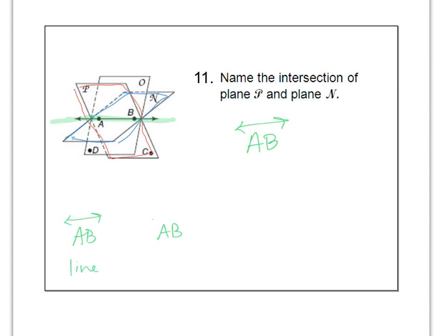this right here is line a, b. This right here is segment a, b. And this right here, with nothing above it, is distance from a to b. So that's not really part of the answer, but that's just something that you need to keep straight.